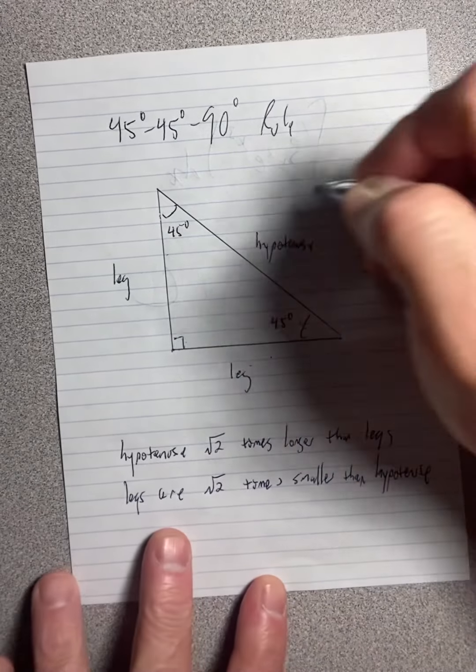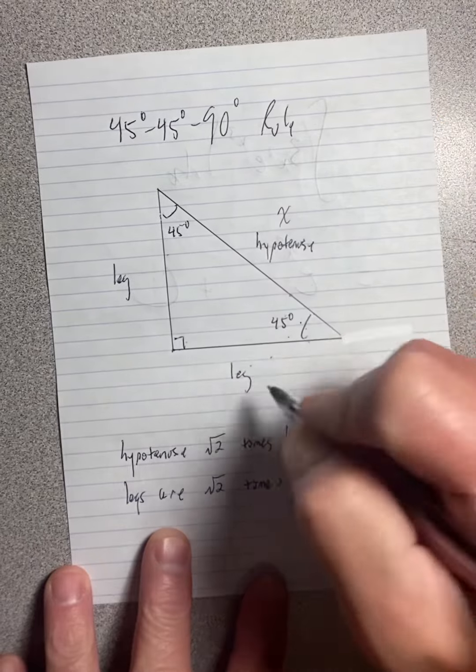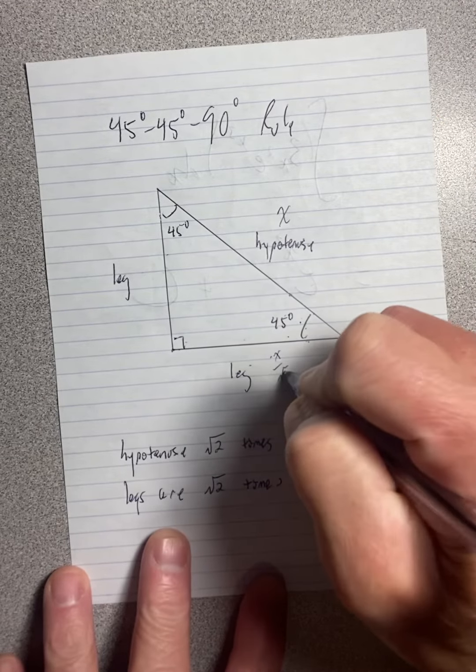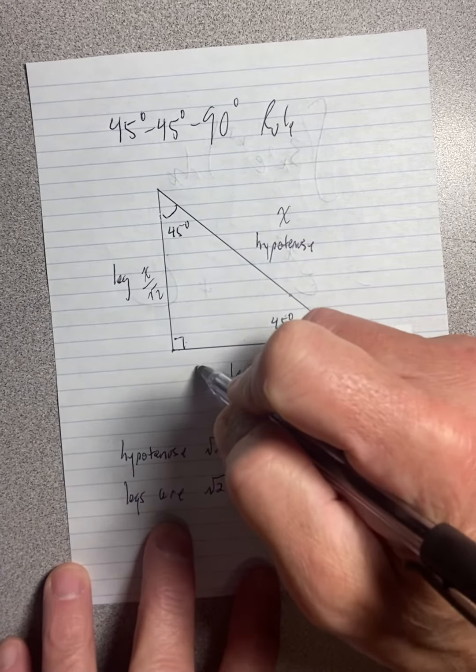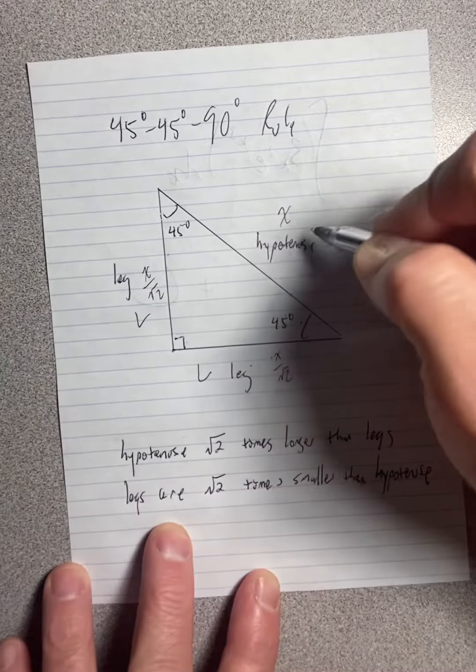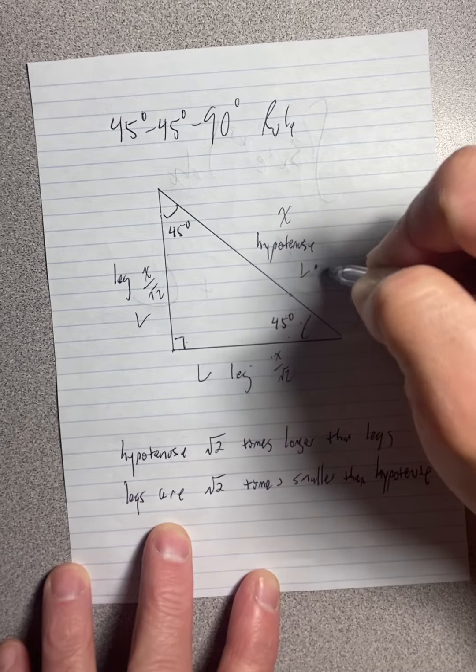So if we label this x, then this would be x over square root of two, and this would be x over square root of two. If, on the other hand, we label this L, say, then this would be L times the square root of two.